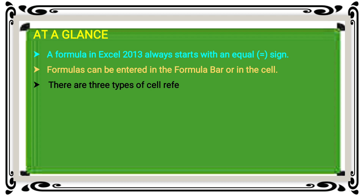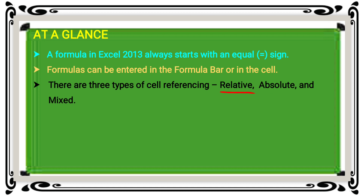There are three types of cell referencing: Relative, Absolute, and Mixed. The default cell referencing is relative. If you do not set any referencing, the cell reference is automatically set as a relative reference.